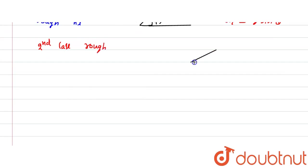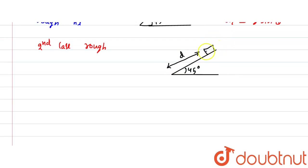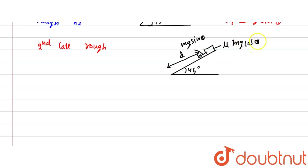For the second case, the rough block FBD: the distance is the same and the angle is 45 degrees. The component along the incline is mg sinθ, and the friction force opposing motion is μN, where N = mg cosθ. So the acceleration for the rough case is a2 = g sinθ − μg cosθ.